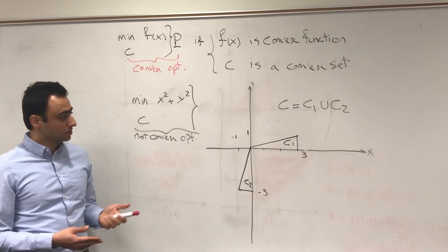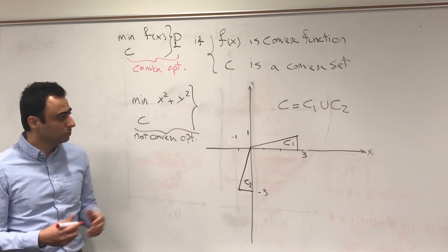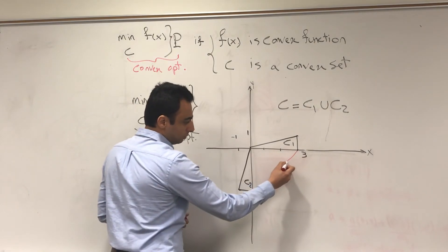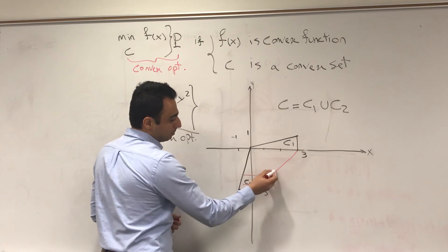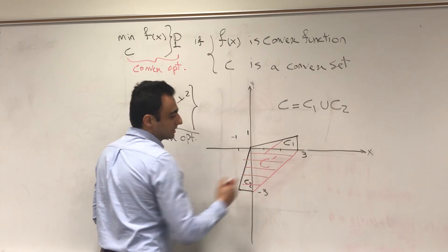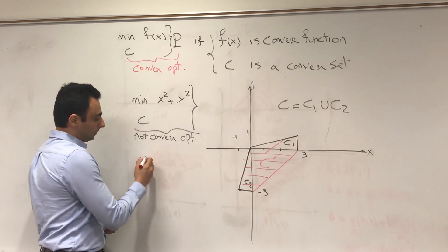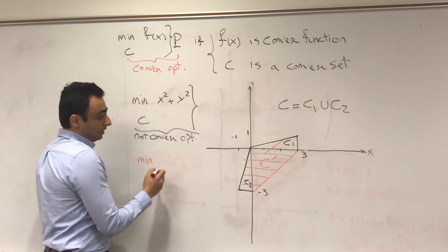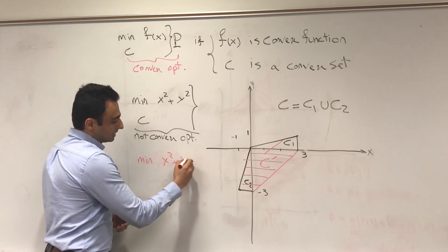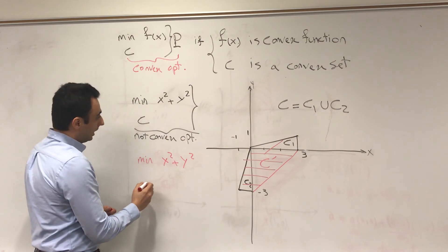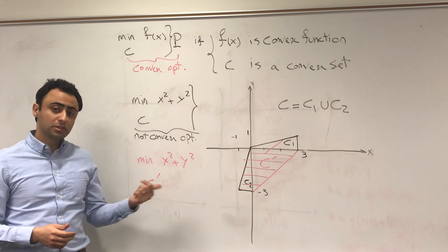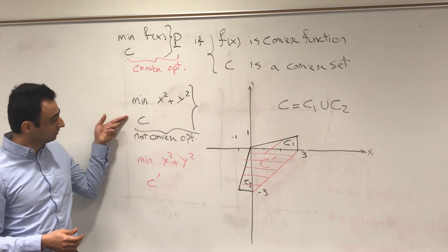How can we solve this problem? We can use the notion of convex hull to connect these two sets together to get a larger set, call it C, and solve the resulting problem. This becomes a convex optimization problem with the same cost function and a convex constraint set. We call this the relaxation of the original problem.